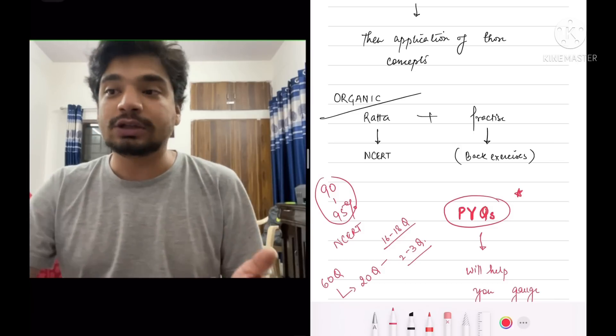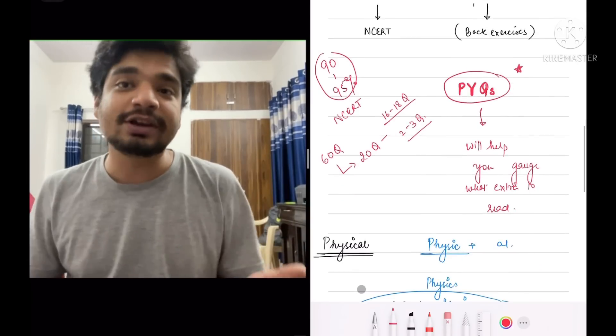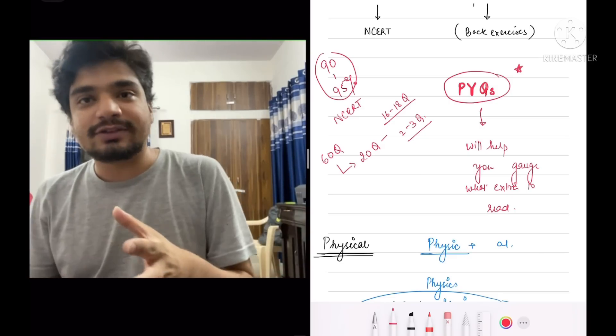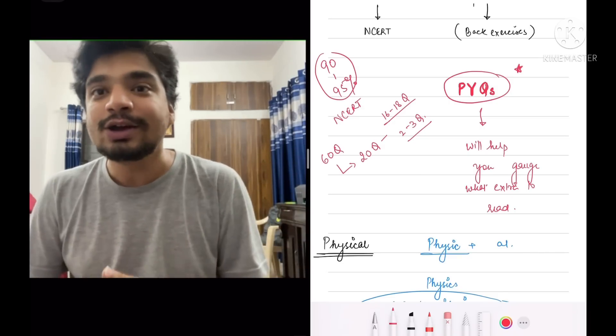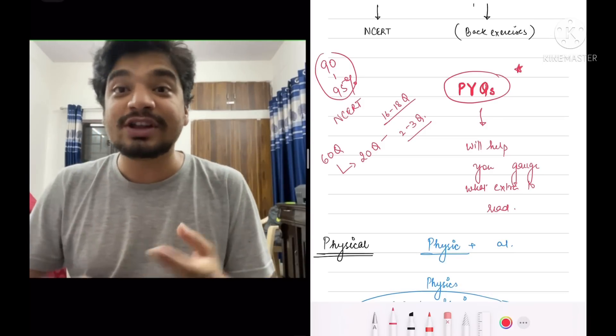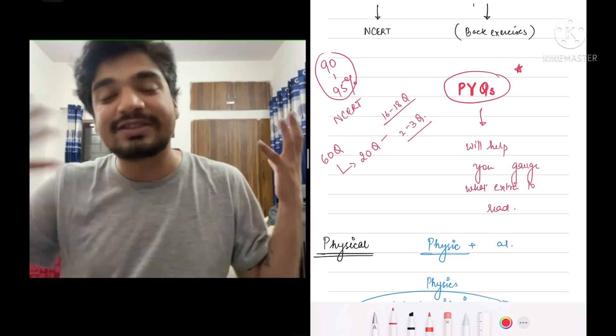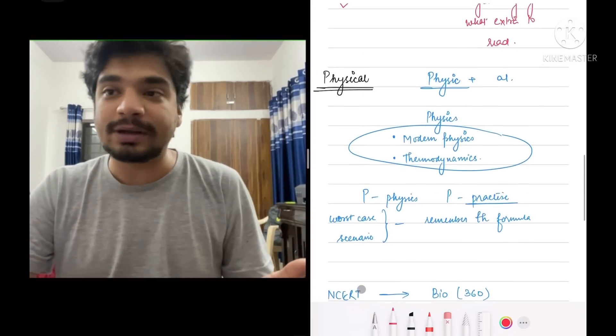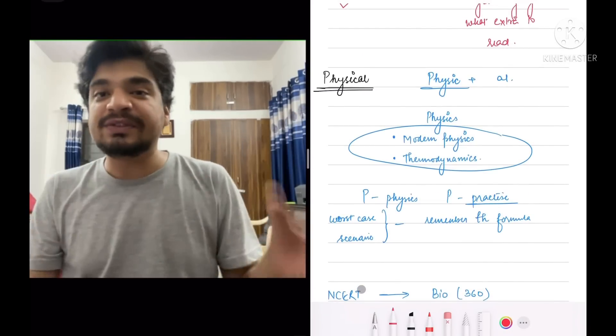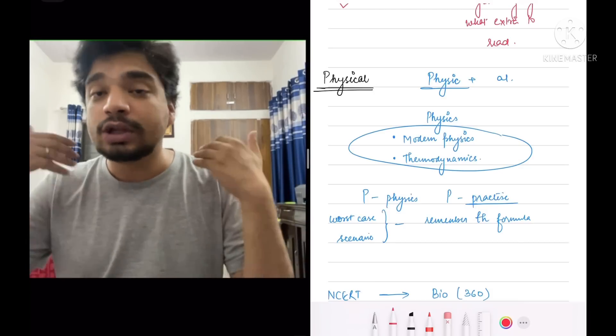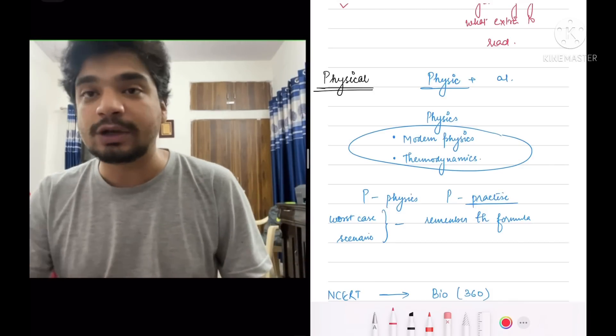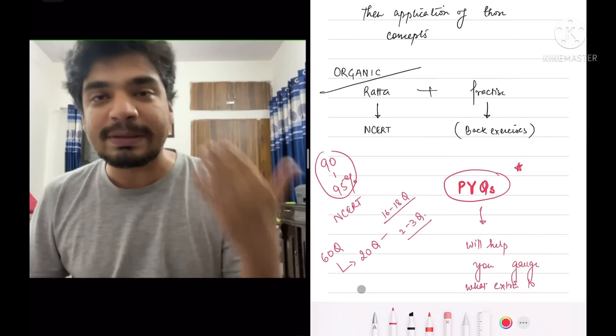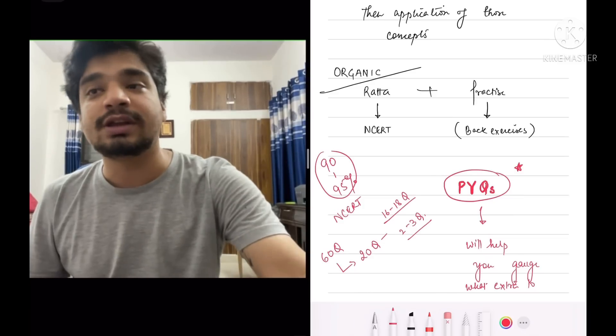Now, last but definitely not the least, physical. Physical, the name itself suggests physics. So read physical with physics, find a great teacher who teaches you thermodynamics and modern physics. 20 to 30% of chemistry is just that, it's interlinked with physics. The remaining part worst case scenario, you just need to remember the formula. P for physical, P for physics, P for practice, your physical and physics will improve. The more you practice questions, it will keep on improving. If you say it's not improving, it's simply a function of the fact that you're not practicing enough, plain and simple. The more you practice, the more your physical and physics will improve.